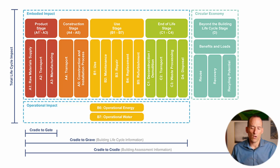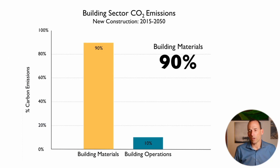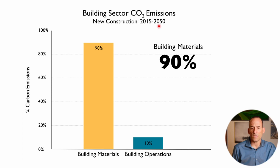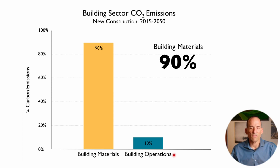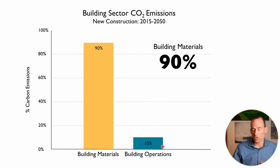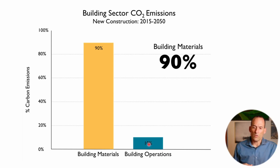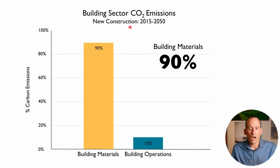If we look at the amount of energy going from building materials to building operations in a modern house between 2015 and 2050, about 90% of the carbon is going to be attributed to the building materials and only 10% to building operations. That means it's going to take many years of building operations — assuming an annual basis — to equal the carbon it took to build those buildings. But 10 years from now, you'll have 10x of that building operations impact, meaning in 10 years, that building's operations are going to be more impactful than the building materials.